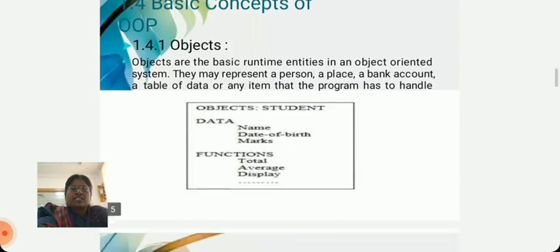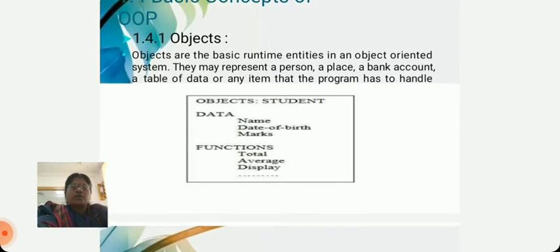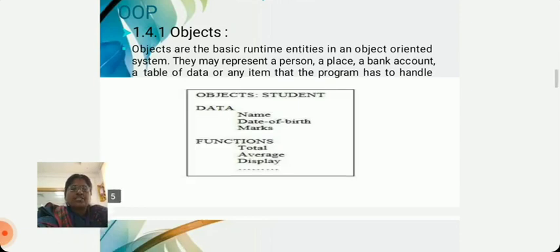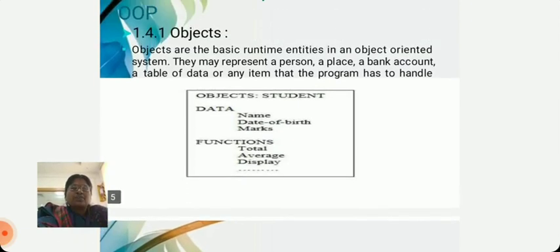Basic Concepts of OOPs. One: Objects. Objects are the basic runtime entities in an object oriented system. They may represent a person, a place, a bank account, a table of data, or anything that the program has to handle. Examples of data: name, date of birth, marks. Functions: total, average, display. Here the object is student.